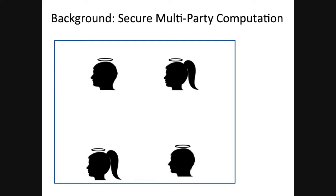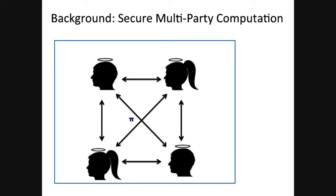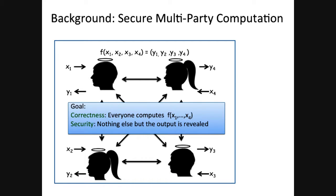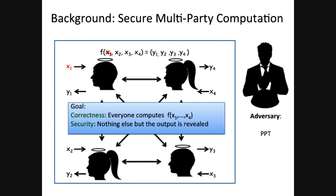This talk is about MPC, where a set of mutually distrustful parties try to securely compute a joint function on their inputs such that the honest party receives the correct output and the only new information leaked is just the output. We want this to hold in the presence of an adversary who can corrupt any arbitrary number of parties. For this talk, the adversary will be polynomially bounded, malicious, and static. We follow the ideal-real paradigm.